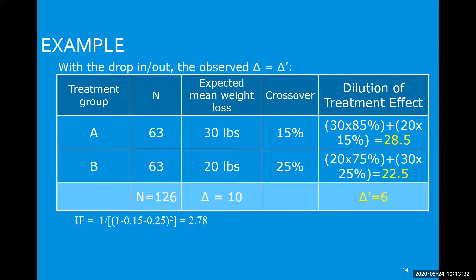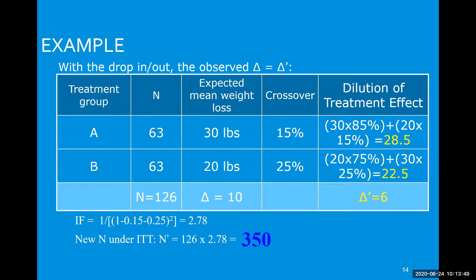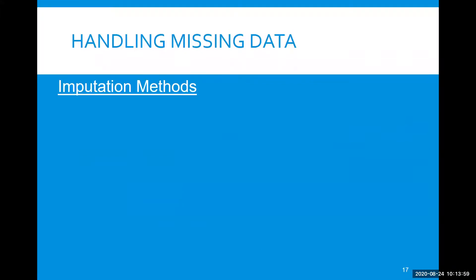If we account for this at the beginning of the study using our inflation factor — one over (1 − 0.15 − 0.25) squared — that gives us an inflation of almost three. Our new total sample size for an intent-to-treat analysis, rather than 126, becomes 350. It's quite a large inflation, and it's important not to forget to do that.